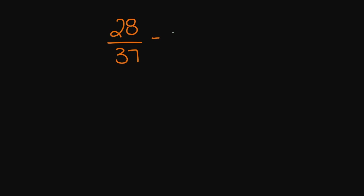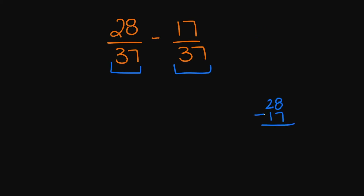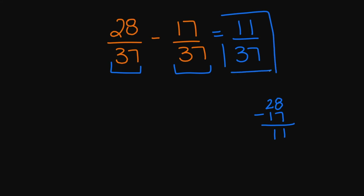Let's try 28 over 37 minus 17 over 37. My denominators are the same, so I'm going to subtract my numerators. 28 minus 17: 8 minus 7 equals 1, and 2 minus 1 equals 1, so 28 minus 17 equals 11, over 37. Since I cannot simplify any further, your final answer is 11 over 37.